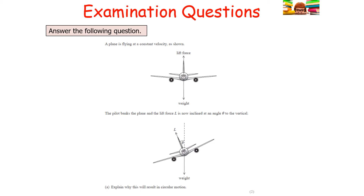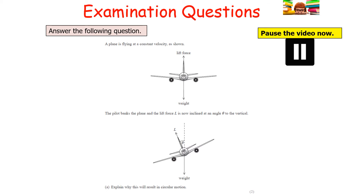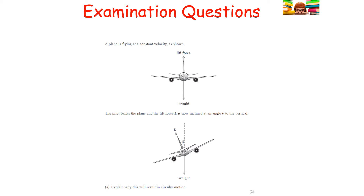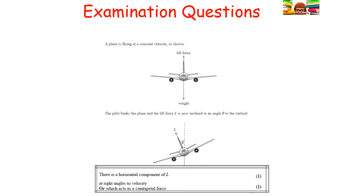Next question: a plane is flying at constant velocity and the pilot banks the plane so that the lift force L is inclined at angle θ to the vertical. Explain why this results in circular motion. Because L is at an angle, it has a vertical component (L cosθ = weight) and a horizontal component that is unopposed. This horizontal component of L acts as the centripetal force — it acts perpendicular to motion towards the centre of the circle — and therefore produces circular motion.